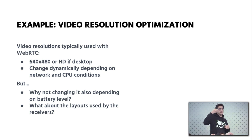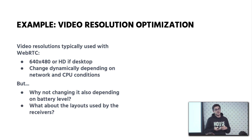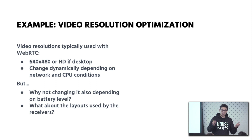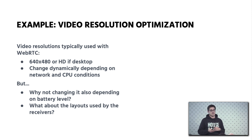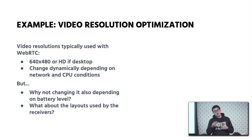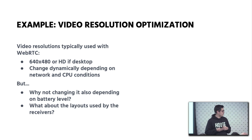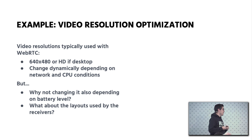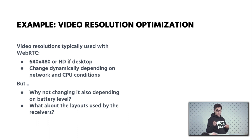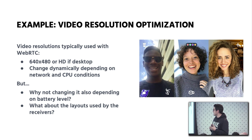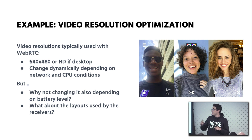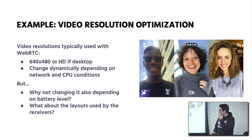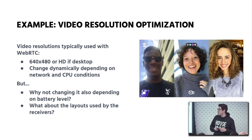But we can do more things on top of that. For example, why don't we change the resolution that we are sending depending on the battery level of the device, so that when users are on low battery you can preserve the battery and they can have longer conversations? Or what is the impact of the layout of the video on the resolution that you use? If we look at a typical Houseparty conversation with three people in a room and the phone in landscape mode, you have a grid like this, and we said that we are using a VGA resolution.